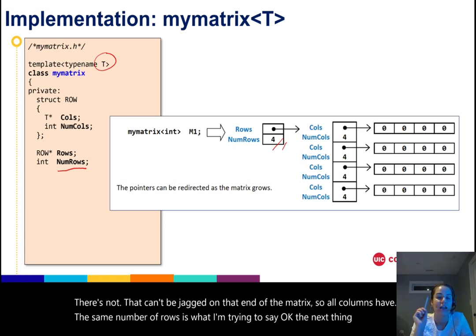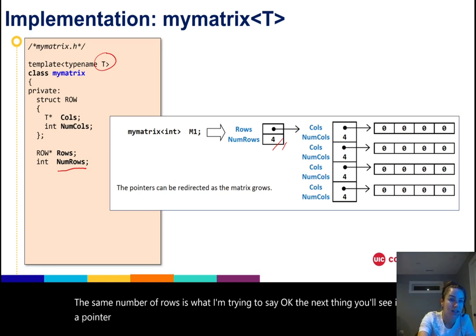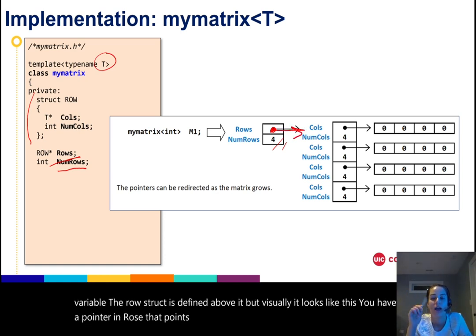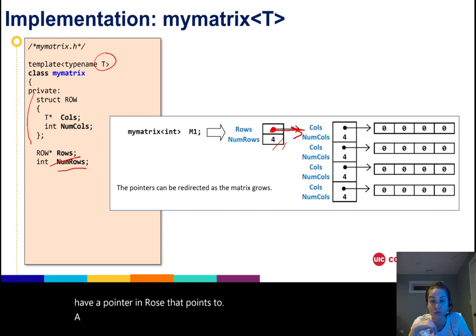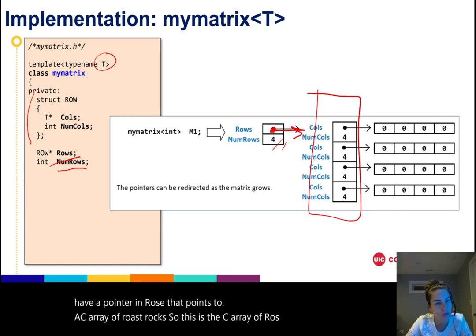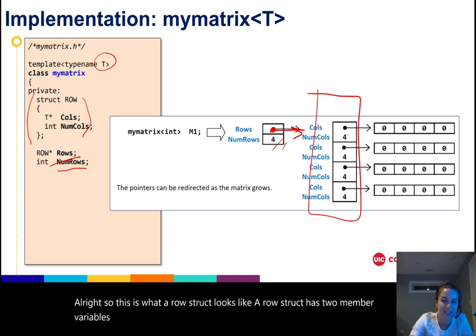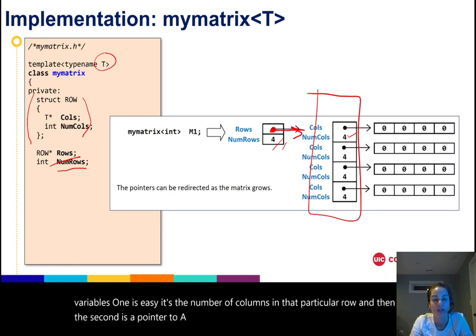The next thing you'll see is a pointer to a row struct. That's what the rows variable is, the rows member variable. The row struct is defined above it, but visually it looks like this: you have a pointer in rows that points to a C array of row structs. So this is the C array of row structs. A row struct has two member variables. One is easy, it's the number of columns in that particular row.